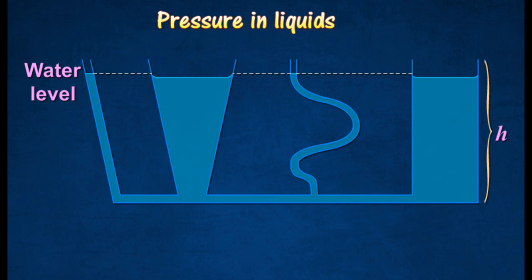When a liquid such as water is poured into the Pascal's vase as shown in the figure, the water in each tube rises to the same height. This shows that liquid always finds its own level.